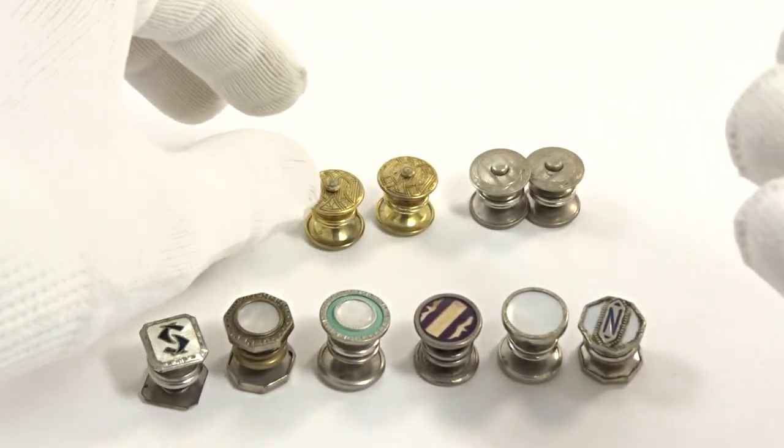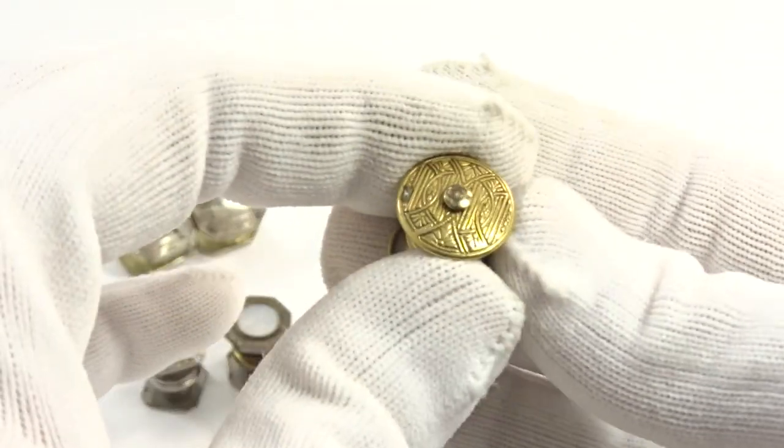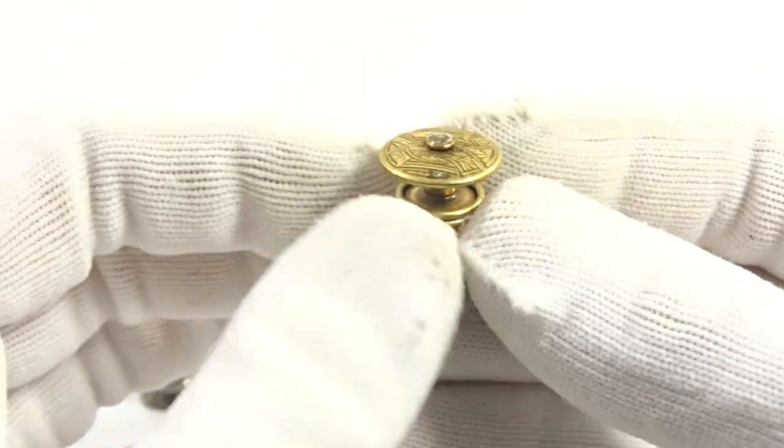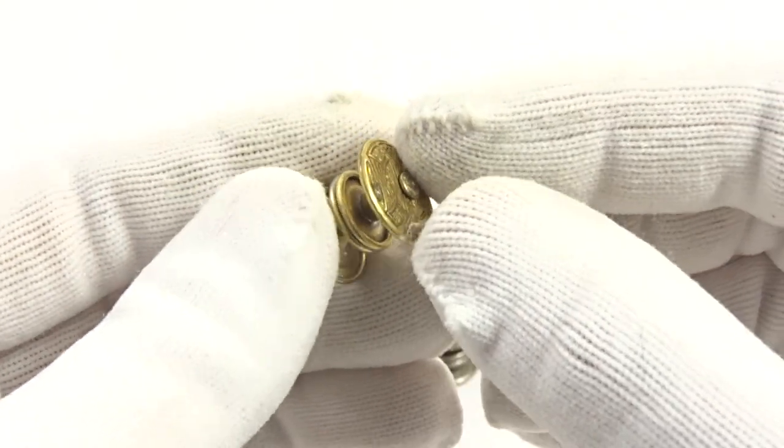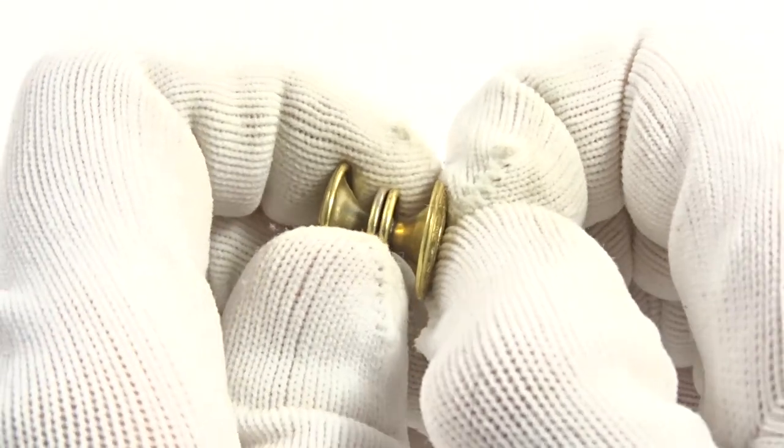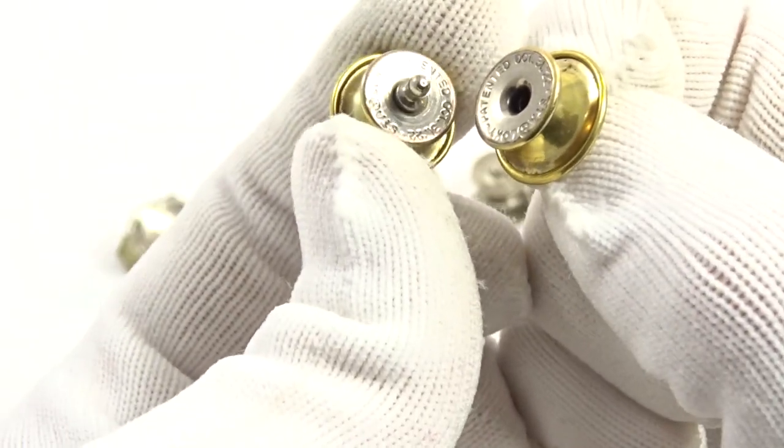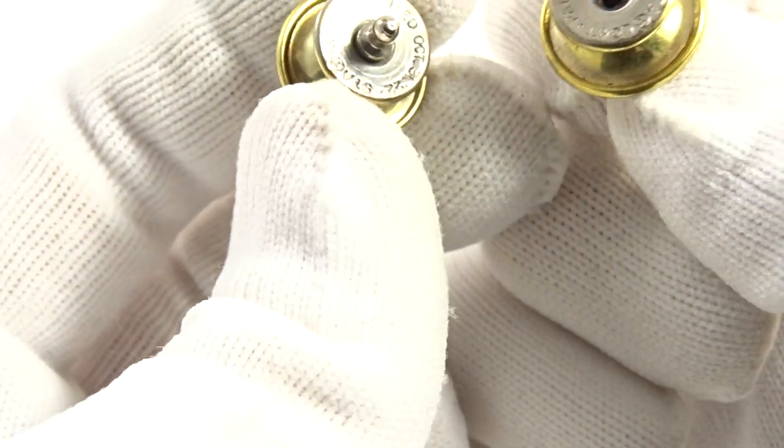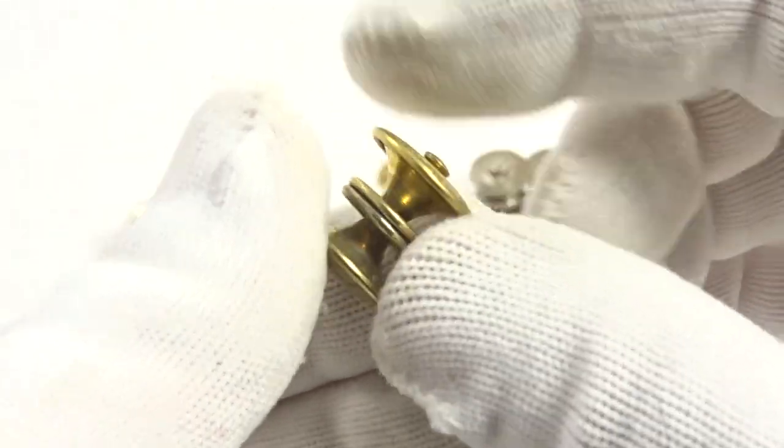This one here is called a stay locked, and these are quite popular and quite desirable by collectors as well. You'll see there's a little knob on top here. What you need to do is you don't push it, but you actually have to stick your nails in between and pull it out to release. You can see that says 'patented' and 'stay locked.'